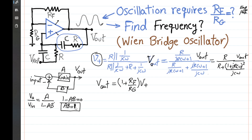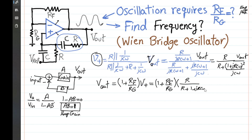I could have just used AB = 1 directly, with B being the feedback transfer function I found and A being the gain. Substituting V-plus, the loop gain becomes (1 + RF/RG) times [R over (R + (1 + jRCω)² / jCω)] times Vout. The Vout cancels out, and we need this loop gain to be exactly equal to 1.